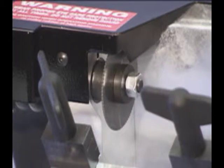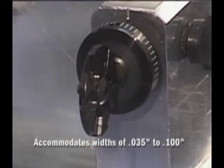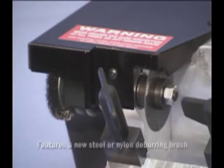The DBM-1 is a compact duplicator featuring a 45 thousandths carbide cutter. The guide can be rotated to accommodate widths from 35 to 100 thousandths. A new feature of the DBM-1 is a steel deburring brush. Nylon brushes are also available.